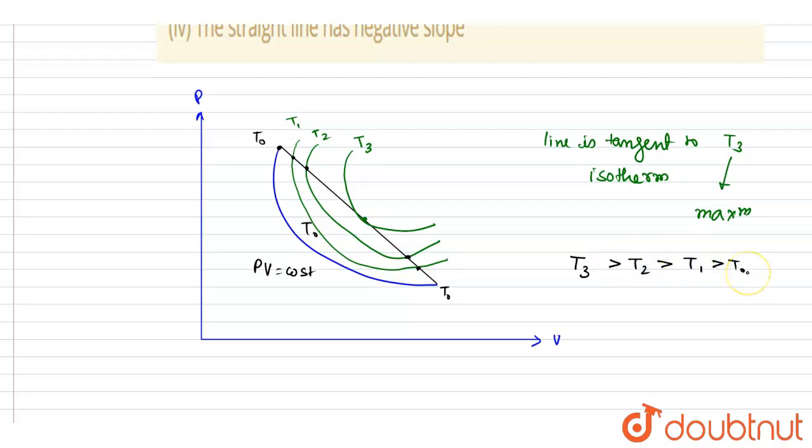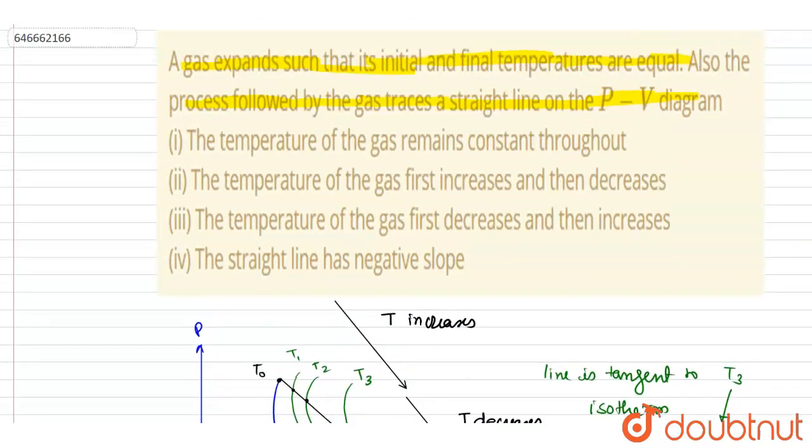And in this way there can be infinite isotherms. So basically, first the temperature is increasing from here to here, the temperature is increasing, then the temperature is decreasing. Temperature increases, then temperature decreases. So if you see the options here...